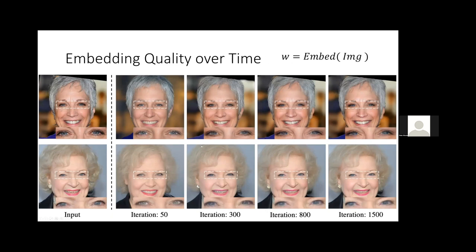Looking at the images in the top row — the left is the input and then you see different types of embeddings. They look very similar at some level, but if you zoom into the eyes you see them looking more realistic in the third column. In the end the eyes lose their shininess and no longer look natural. This embedding is generally a trade-off between how close you can get to the input image pixel-wise and how semantically meaningful it is.